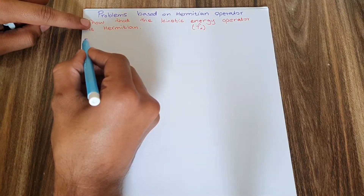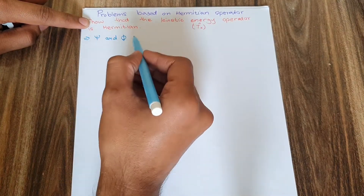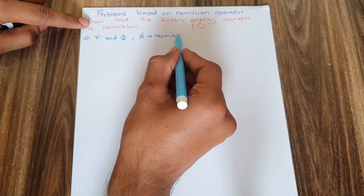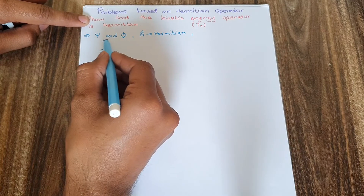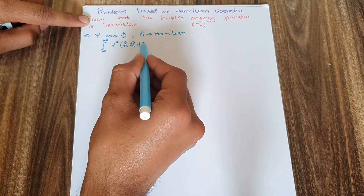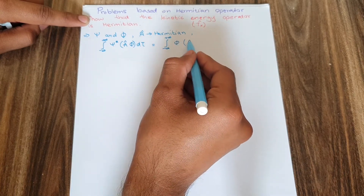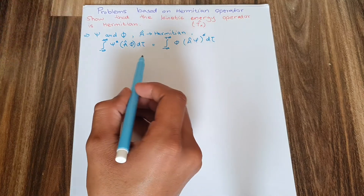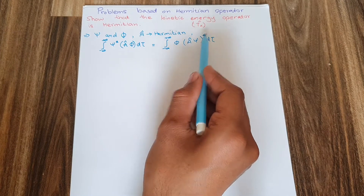First of all, in order to prove this, you need to take two functions. For example, if I have two eigenfunctions psi and phi, and I have an operator A which is Hermitian, my general equation will become: the integral from negative infinity to positive infinity of psi* times A applied on phi d-tau equals the integral of phi times A applied on psi* d-tau. This is the condition for a Hermitian operator.